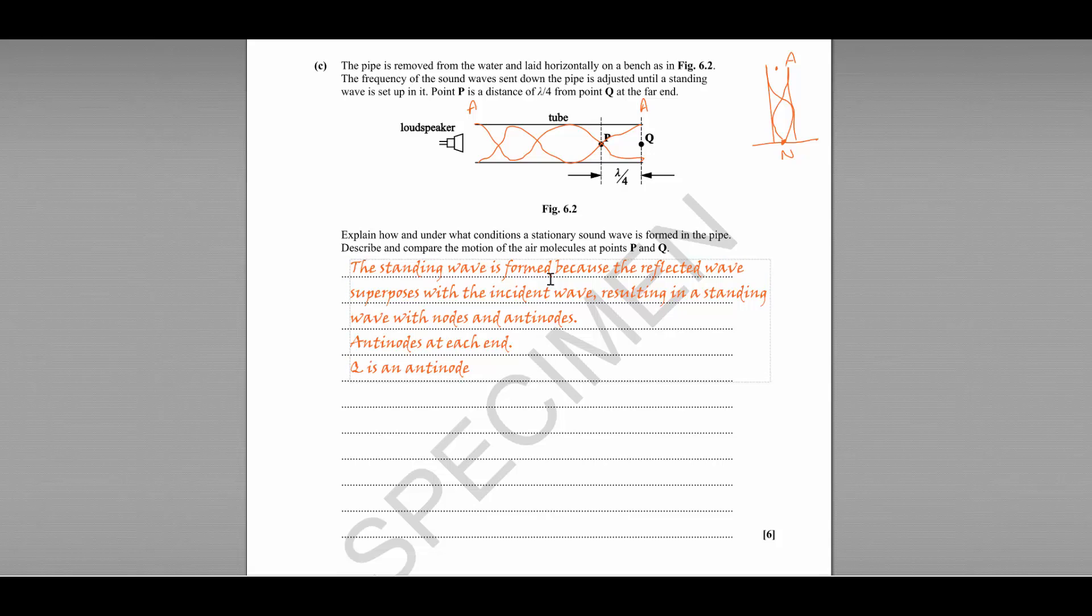So we're describing and comparing the motion of the air particles at points P and Q. Q is an anti-node. Therefore, the molecules are oscillating with a maximum amplitude.